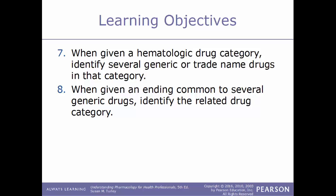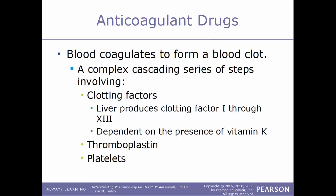When given an ending common to several generic drugs, identify the related drug category. Our first type of drug for this chapter is anticoagulant drugs. Blood will coagulate to help form a blood clot through a very complex, cascading series of steps involving many different components. One of the key things involved are the clotting factors, which are produced by the liver and numbered from 1 to 13. These are also dependent on the presence of vitamin K.